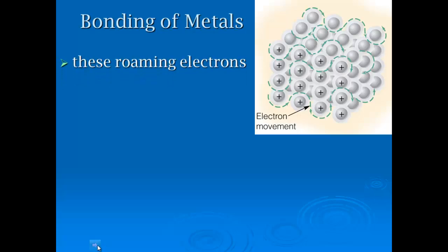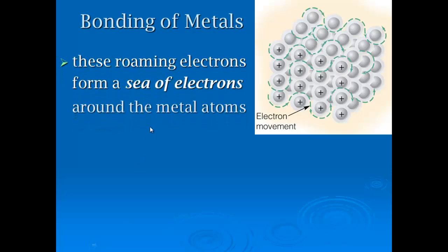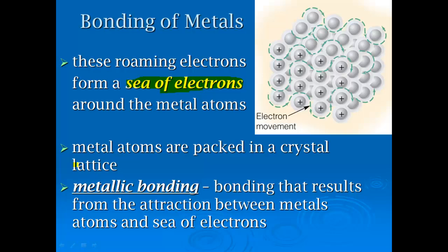The core electrons stay put while everything else moves. The roaming electrons are what we refer to as a 'sea of electrons.' Essentially, you have cations stuck in place while all the valence electrons travel around the metal atoms. They're packed into a crystal lattice, just like ionic compounds. The formal definition of metallic bonding is: the bonding that results from the attraction between the metal atoms and the sea of electrons.